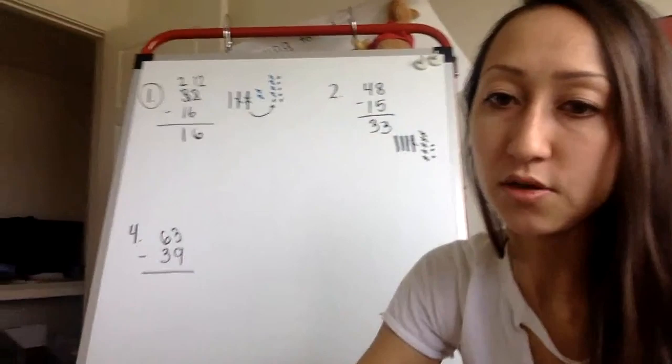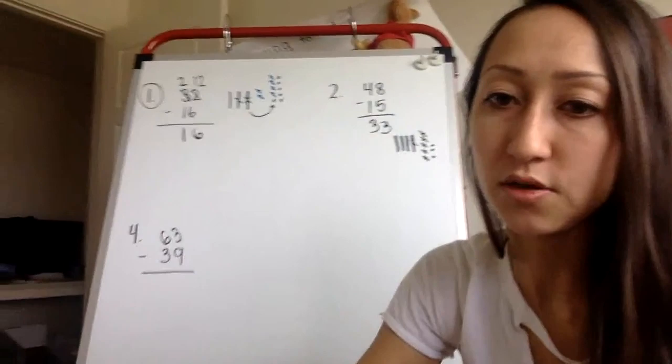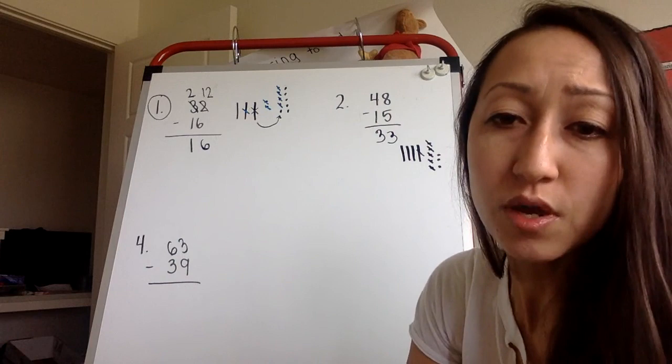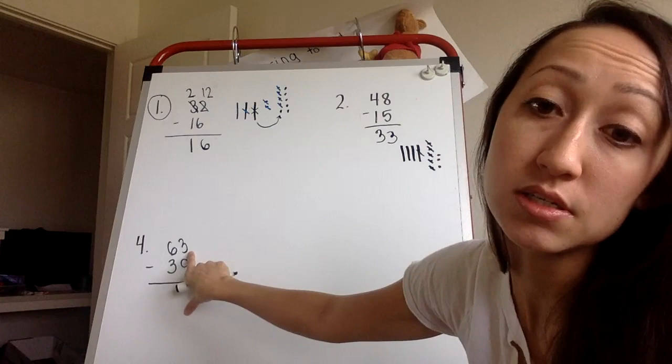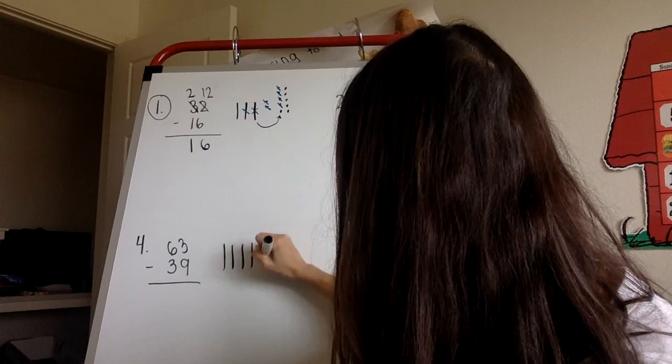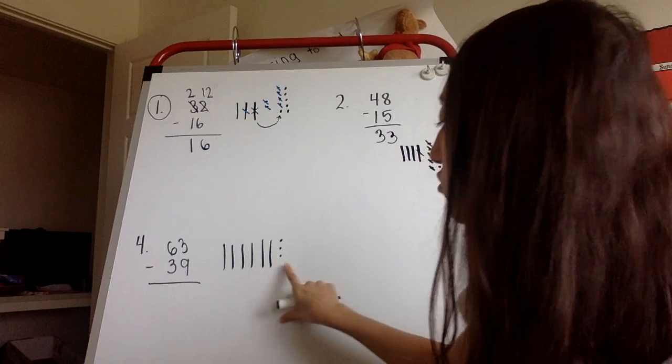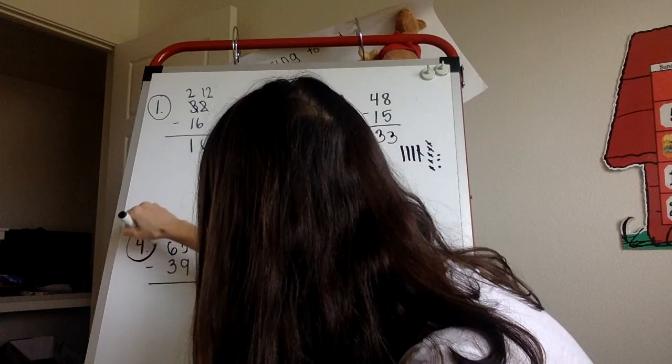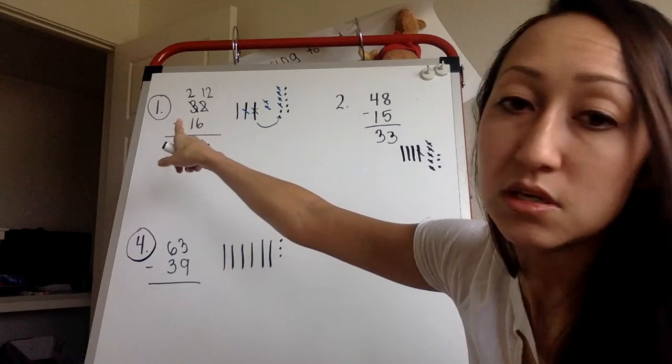Let's look at number four. Do you think I'm going to have to trade or regroup? I have 63. 63 is six tens and three ones and I need to subtract 39. What do you think? Let me draw it out. 10, 20, 30, 40, 50, 60, one, two, three. I need to subtract 39. Do I have enough to subtract nine ones? I do not. So I know right away that I'm going to have to regroup for number four. So I'm going to circle it just like how I did number one.